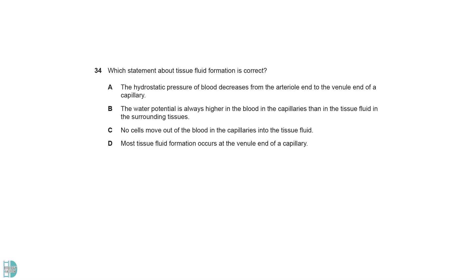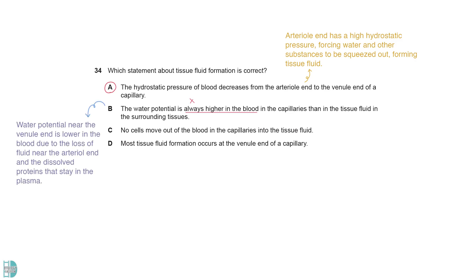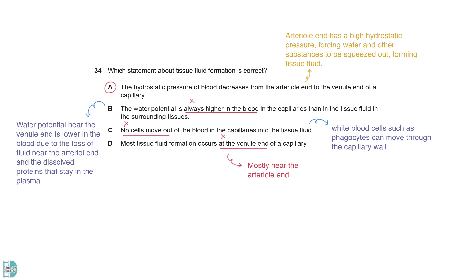A is correct. The arterial end has a high hydrostatic pressure, forcing water and other substances to be squeezed out, forming tissue fluid. B is not true — the water potential near the venule end is lower in the blood in the capillaries than in the tissue fluid, due to the loss of fluid near the arterial end and the dissolved proteins that stay in the plasma. C is wrong because white blood cells such as phagocytes can move through the capillary wall and end up in the tissue fluid. D is wrong because tissue fluid forms mostly near the arterial end.